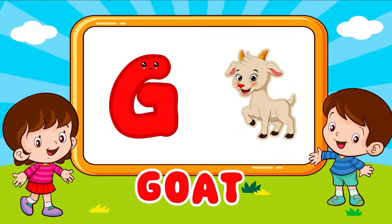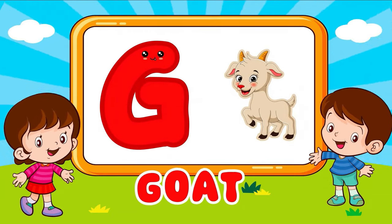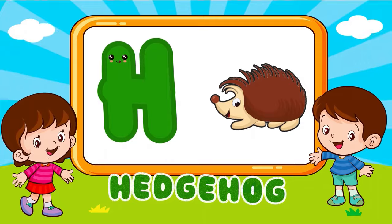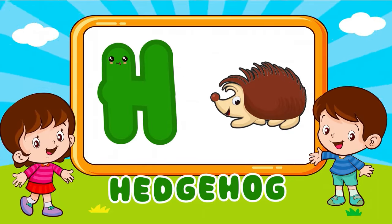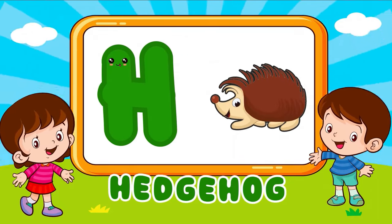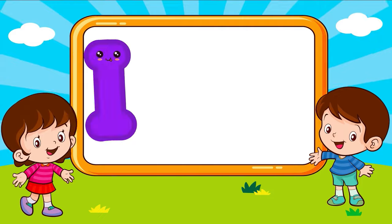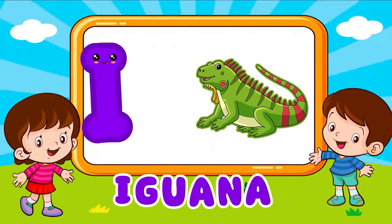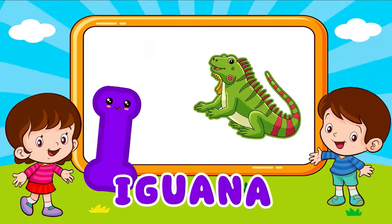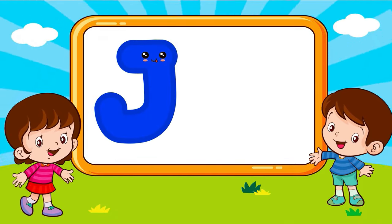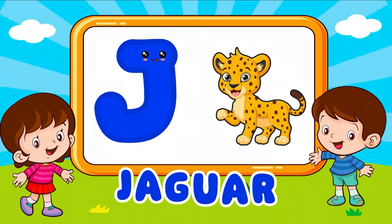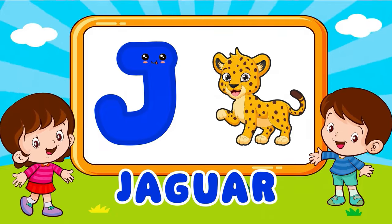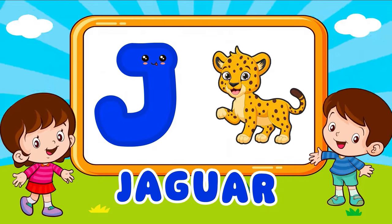H is for hedgehog. H, H, hedgehog, H is for hedgehog. H, H, H. I is for iguana. I, iguana, I is for iguana. I, I. J is for jaguar. J, jaguar, J is for jaguar. J, J, J.